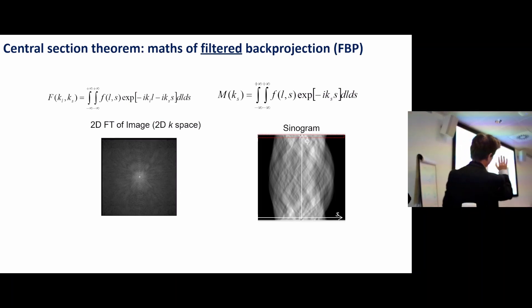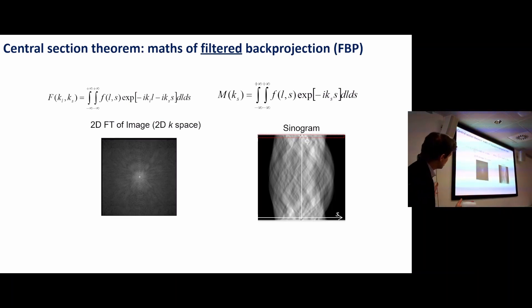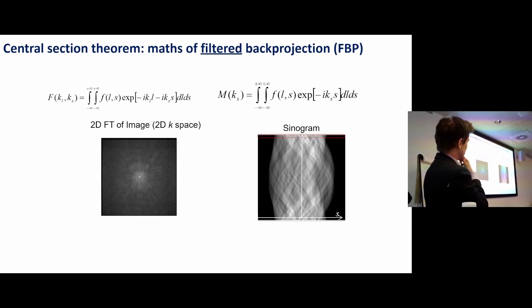Right hand side, Fourier transform of data. Left hand side, Fourier transform of what we want. So any observations if you look at those two expressions at the top? What would we have to do to the thing on the left to get the thing on the right, bearing in mind that we're integrating over dl on the left hand side?